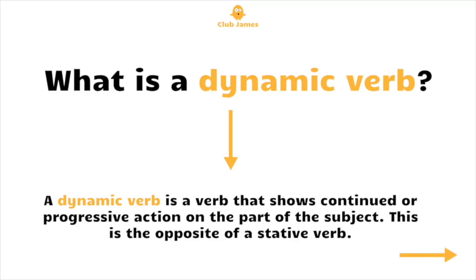What is a dynamic verb? A dynamic verb is a verb that shows continued or progressive action on the part of the subject. This is the opposite of a stative verb.